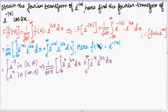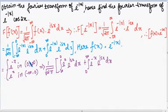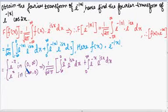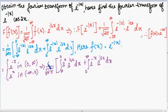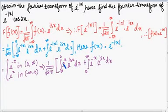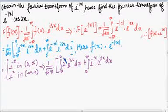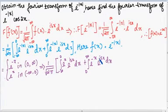Now, f(x) = e^(-|x|) can be written piecewise: f(x) = e^(-x) in the interval 0 to infinity, and f(x) = e^(x) in the interval minus infinity to 0. Substituting the corresponding values, the Fourier transform is rewritten as 1 divided by square root of 2π, integration from minus infinity to 0 of e^(x)·e^(isx) dx, plus integration from 0 to infinity of e^(-x)·e^(isx) dx.